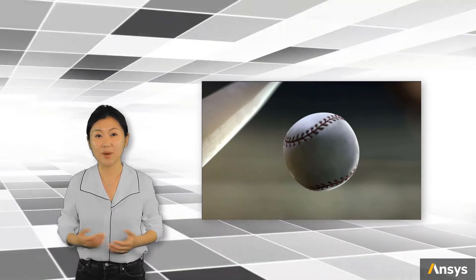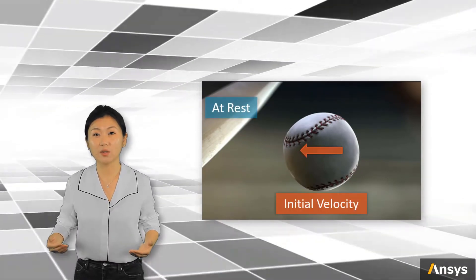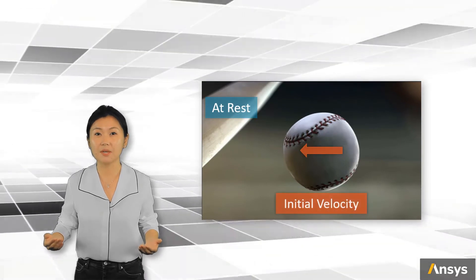Like for this baseball problem, the initial condition could be the bat is at rest and the baseball is flying with the initial velocity 10 meters per second.